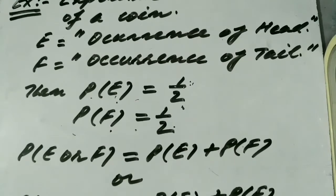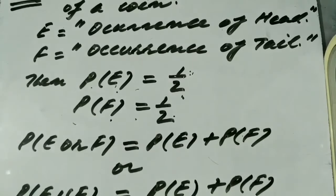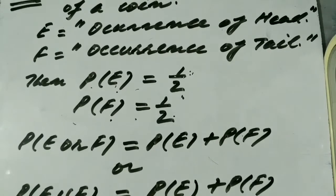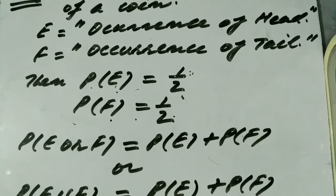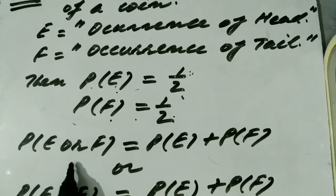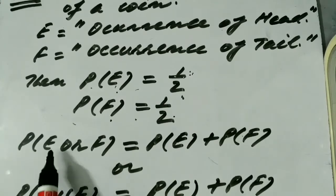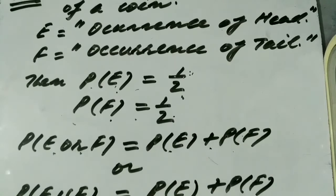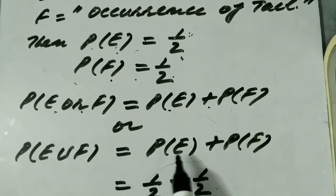Now if we want to find the probability of the event that either E happens or F happens — that means either we have head or tail — at least one of the events must happen, because in the case of one toss there must be head or tail. So according to the addition theorem of probability, P(E or F) is equal to P(E) plus P(F), or in other words P(E union F) is equal to P(E) plus P(F).